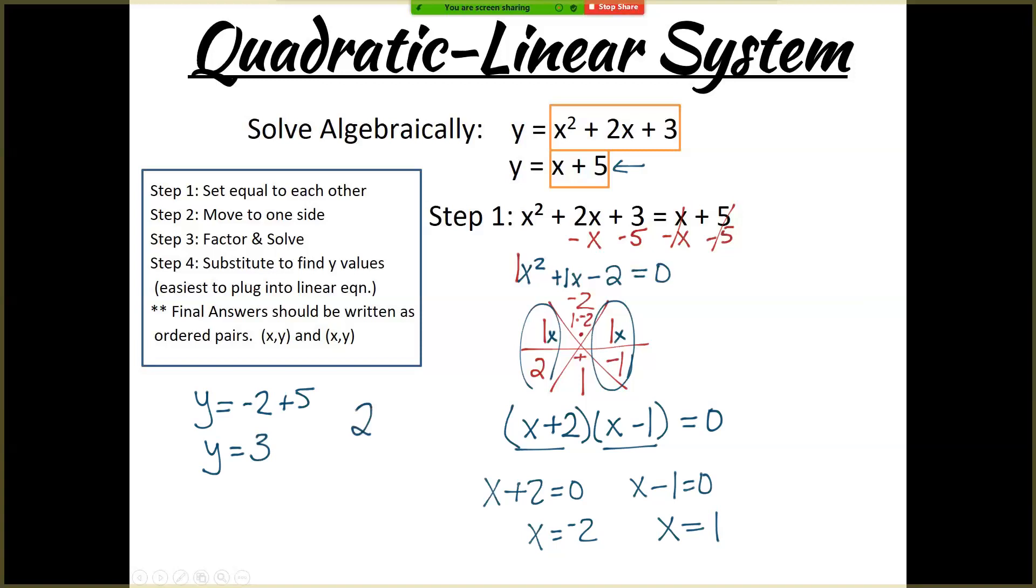Which leads me to the ordered pair, negative 2 comma 3. So I plugged in negative 2, I got an answer of 3. So the ordered pair, negative 2, 3, is where that line and the parabola would cross. But I've got to do it again with the 1. So y equals 1 plus 5. So y equals 6. So my second ordered pair would be 1, because that's what I plugged in, comma 6, because that's what I was given when I plugged into that equation.